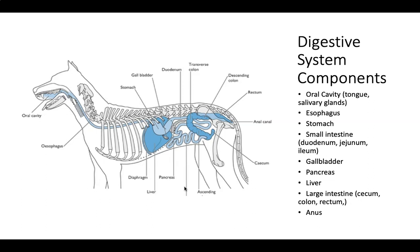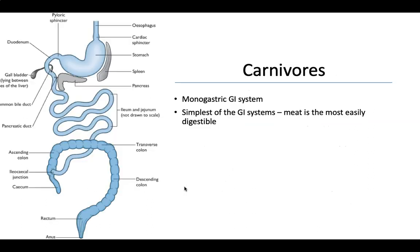Carnivores have what we call a monogastric gastrointestinal system, and it's the simplest of the gastrointestinal systems. Meat is the most easily digestible of all the foods that can be taken in. This is the same with omnivores.